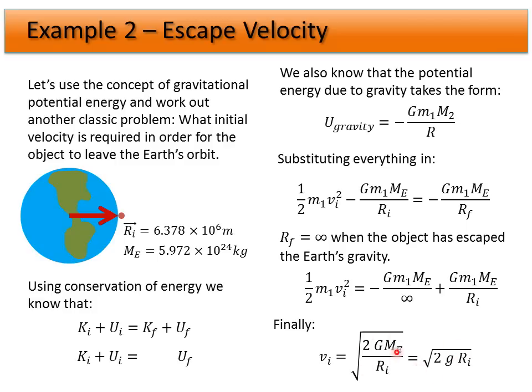But really, it comes down to 2, big G, M over Ri. So gravitation constant, the mass of the object we're leaving, and the radius that we are starting away from it are really the only things that go into our escape velocity.